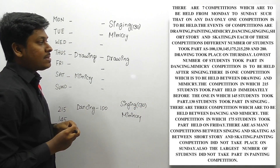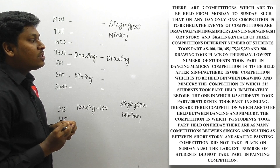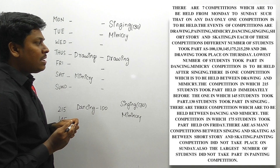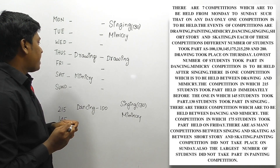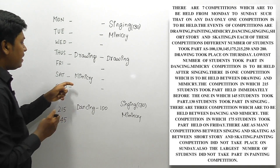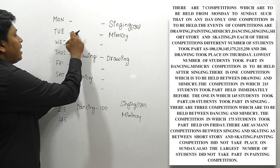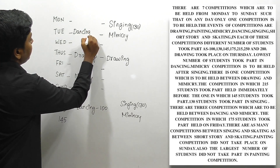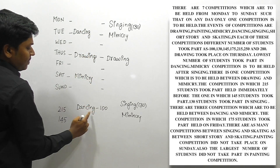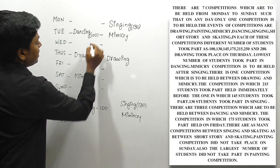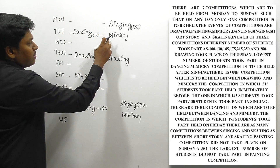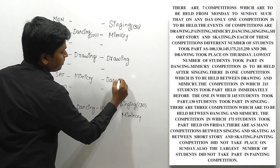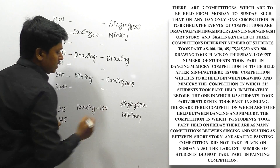Next clue: there are three competitions to be held between dancing and mimicry. So if we fix mimicry at a position, counting back three gives us dancing. We already know dancing has 100 students. This applies to both conditions we're considering — one two three competitions between them.